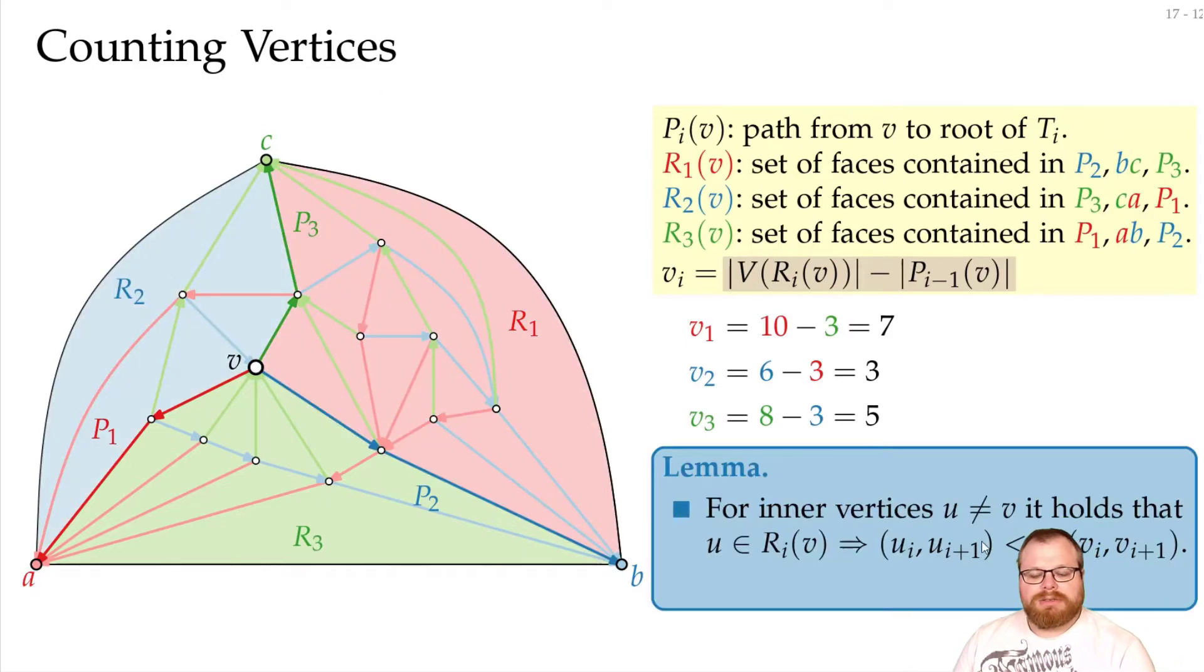And now for every interior vertex it holds that if it lies in some region, like here, then lexicographically for this index the numbers are smaller. Now we know from earlier that if u lies in region 1 of v, then the region 1 of u is a proper subset of the region 1 of v. And that means that in most cases even the first part here is true. If u is in the interior of region 1, we get a smaller sub-region of this.